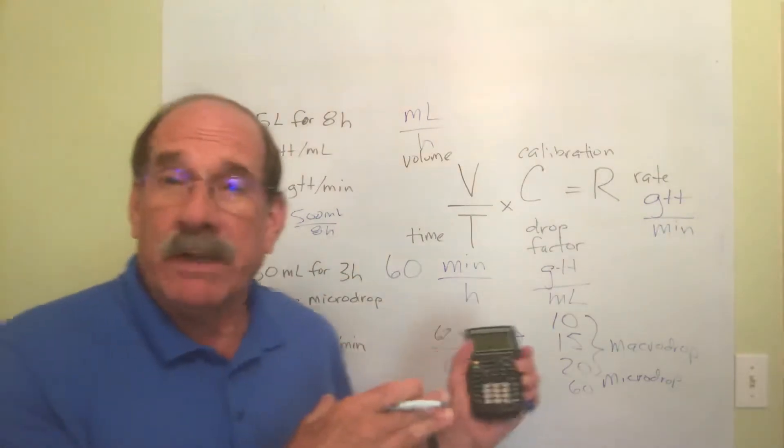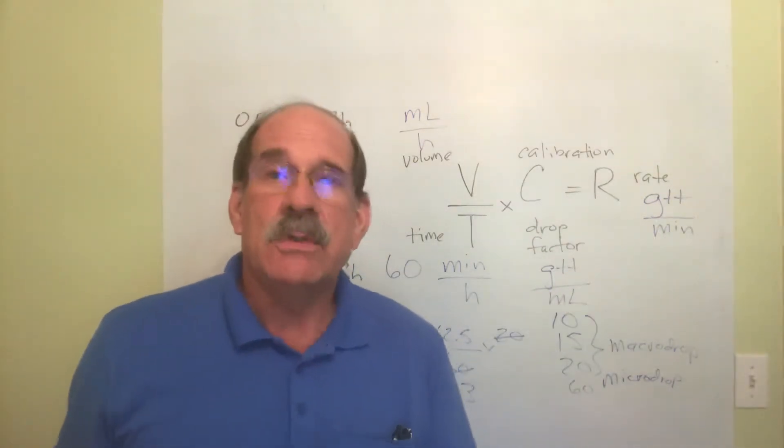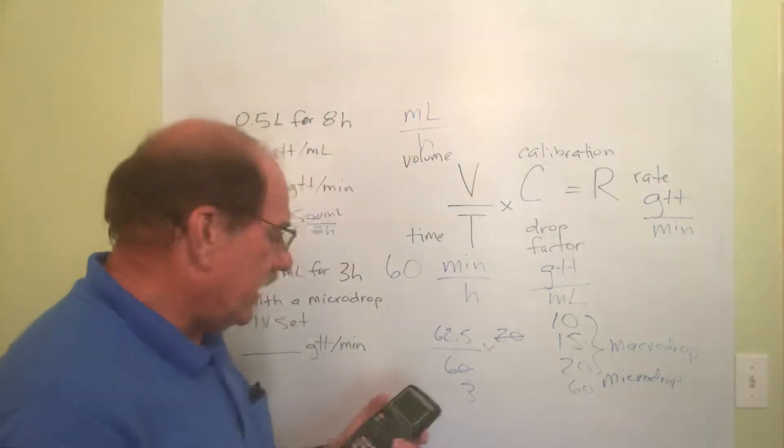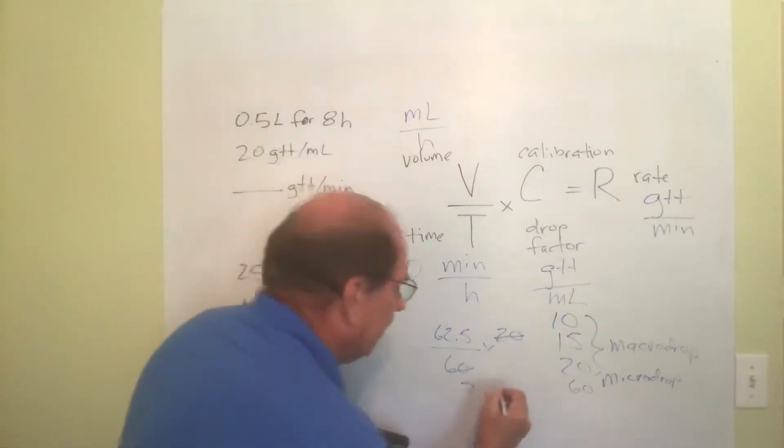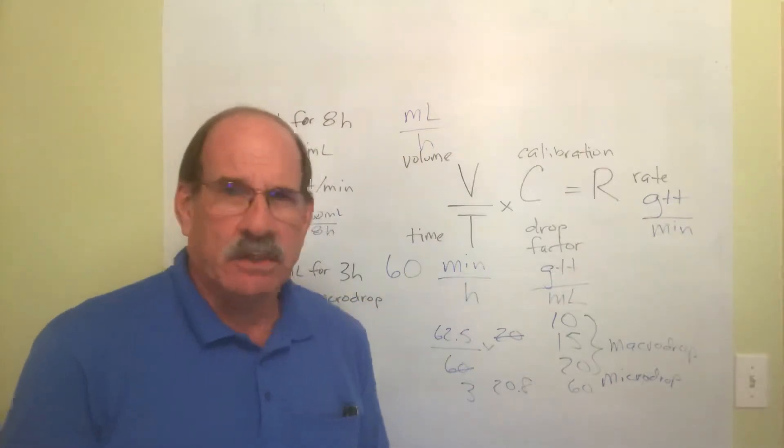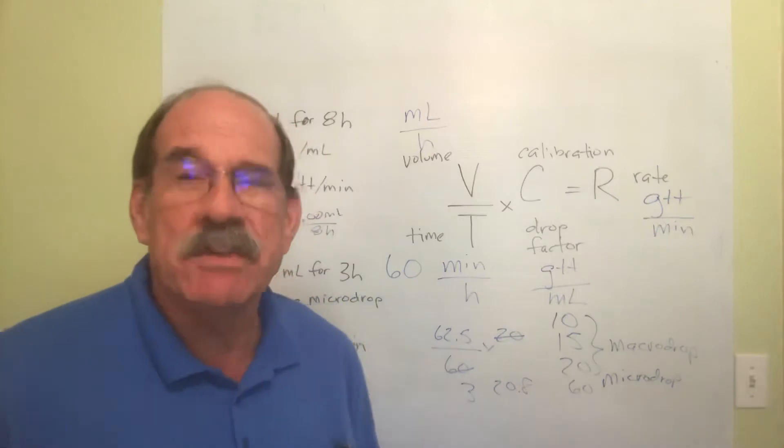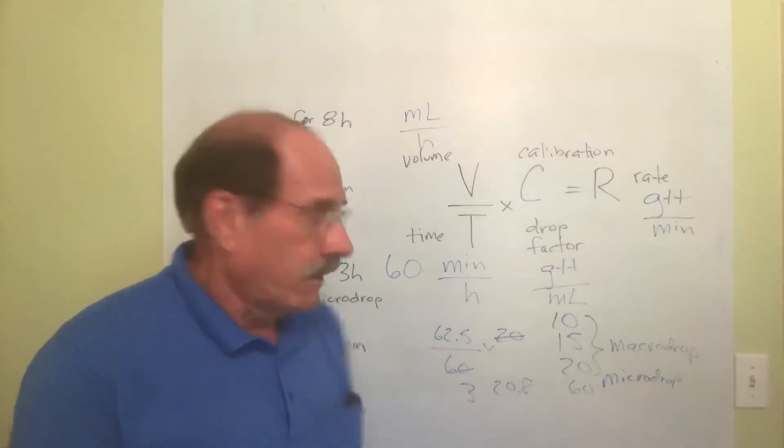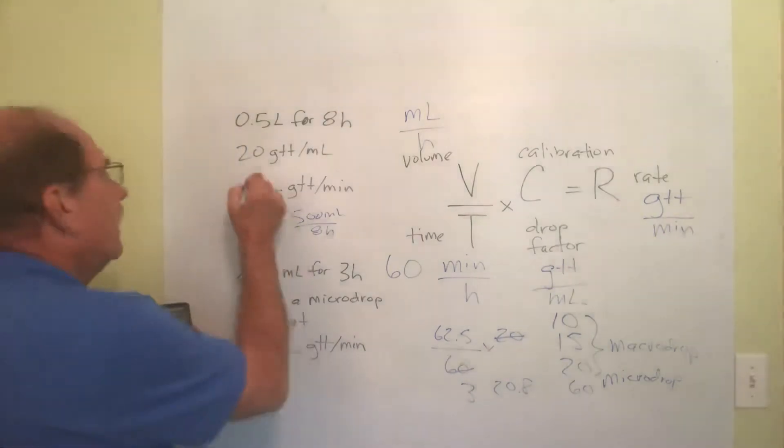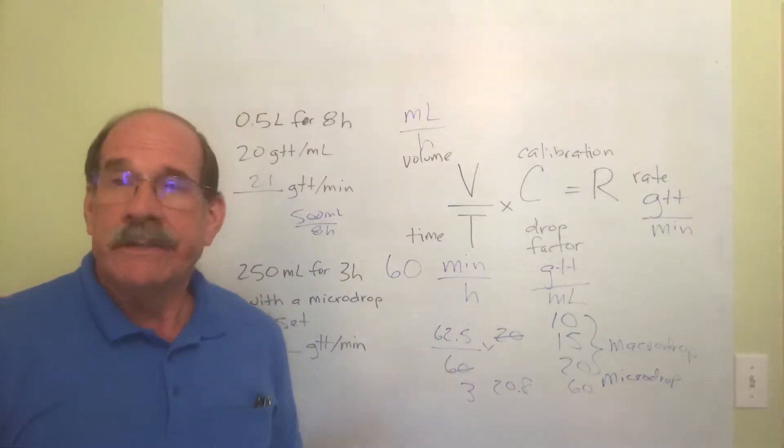So the same rule applies here as applies to the machines. You do the nearest whole number. Now that should really make sense here. You wouldn't say 20.8. I mean come on, let's get real. You can't count partial drops. You can't count, okay here's my drops: 18, 19, 20, 20.8. You can't count partial drops. The nearest whole number. So what do you call the nearest whole number to 20.8? 21. The answer is 21 drops per minute. That's your answer.